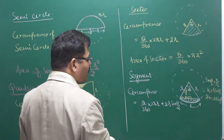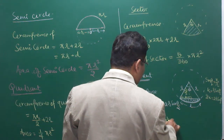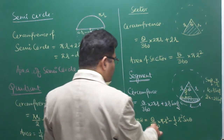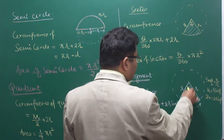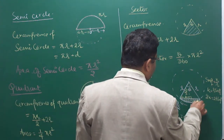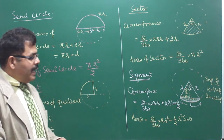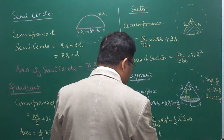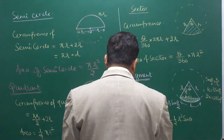The area of the segment is: (θ/360) × πR² − (1/2)R²·sinθ. That means (θ/360) × πR² is the area of the complete sector, minus (1/2)R²·sinθ which is the area of the triangle. Subtracting these gives the area of the segment. The area can also be calculated as (1/2) × L × R, where L is the arc length.